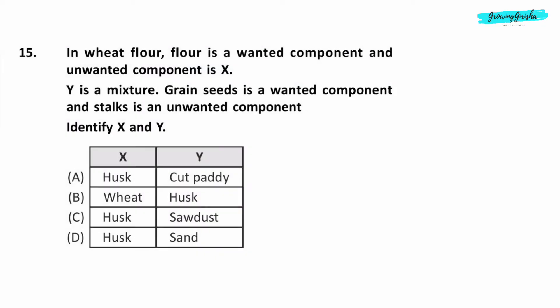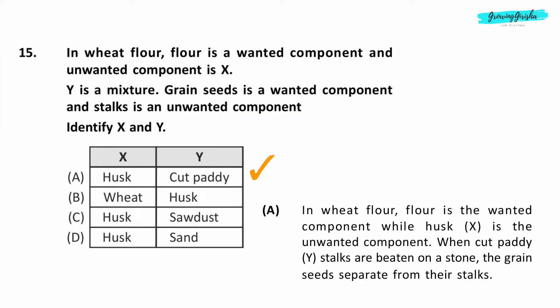Question 15. In wheat flour, flour is a wanted component and unwanted component is husk. Y is a mixture. Grain seeds is a wanted component and stalks is an unwanted component. Identify X and Y. Option A. X is husk, Y is cut paddy.